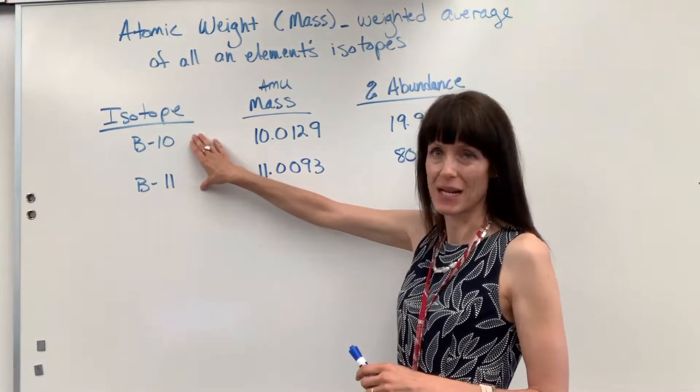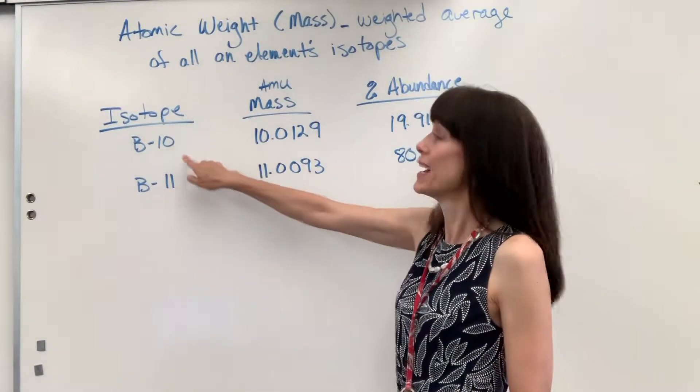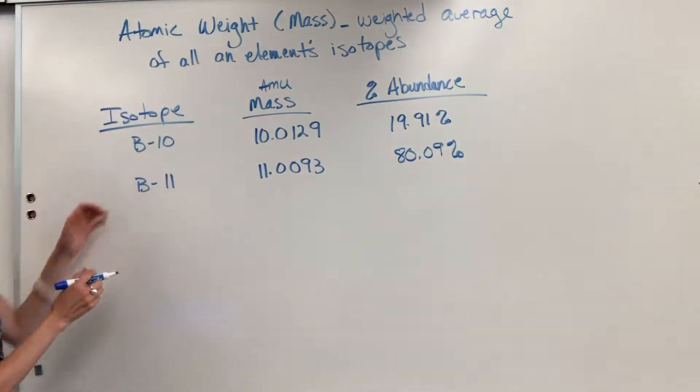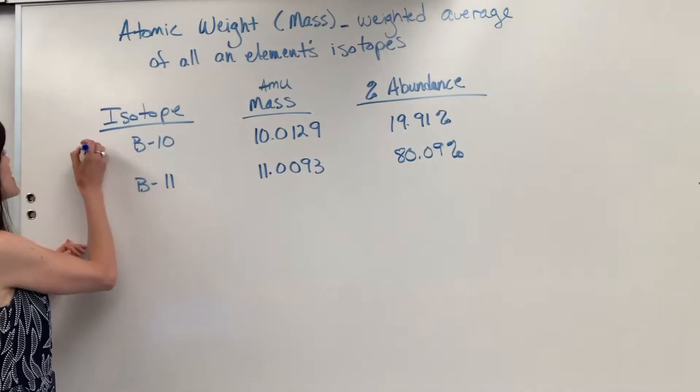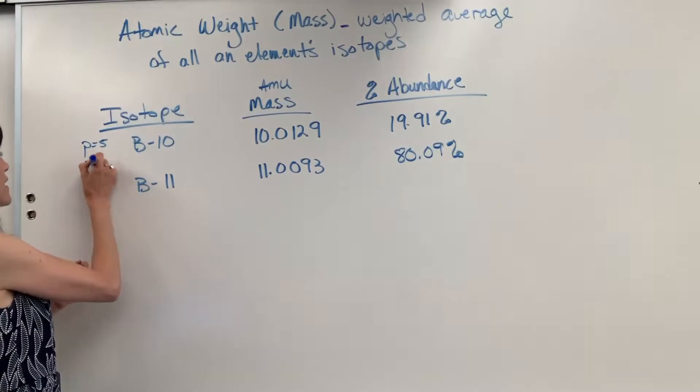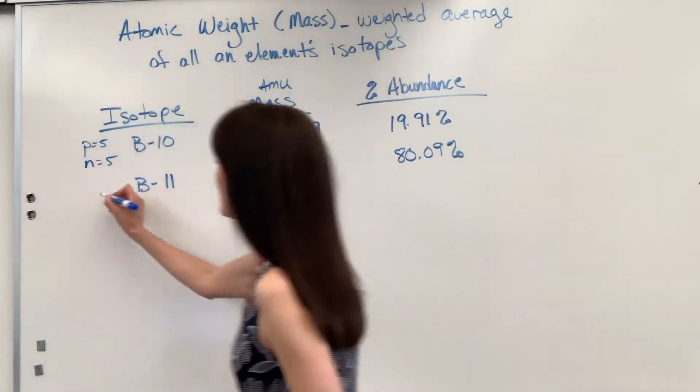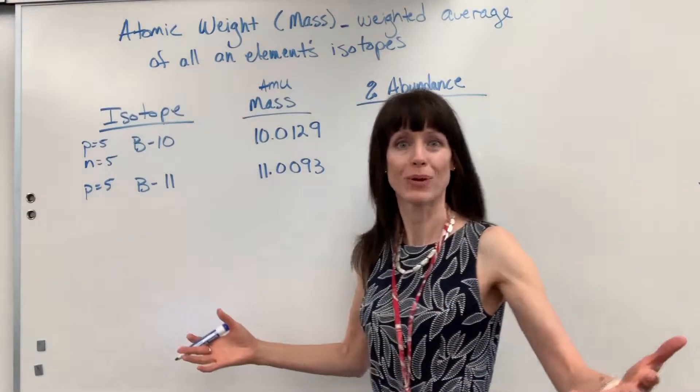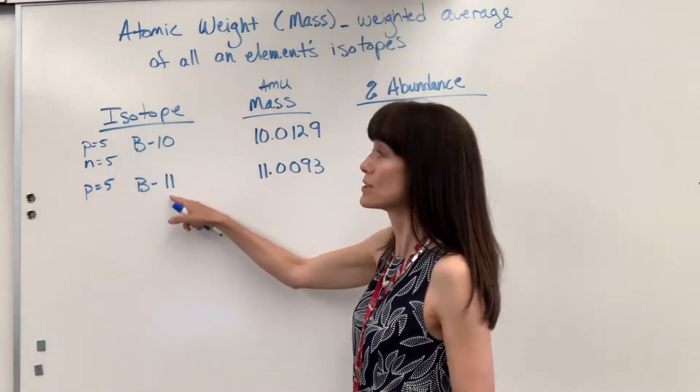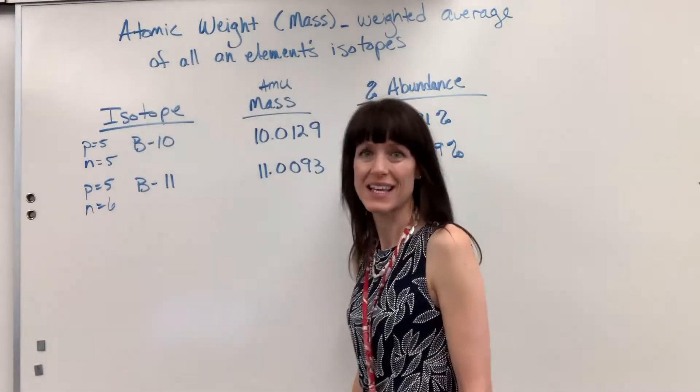I'm going to use boron as our example. Boron has two isotopes: boron-10 and boron-11. Boron has five protons, so if we have five protons and the mass is 10, it means that we have five neutrons. Boron-11, of course, boron has five protons, that will never change. And then the mass number, which is the neutrons plus protons, the neutrons, that's going to be six.